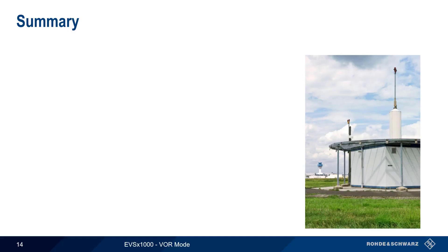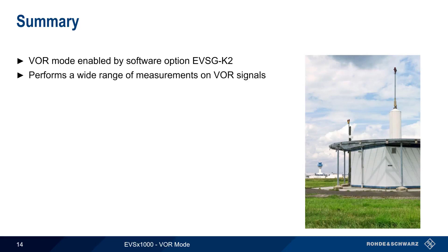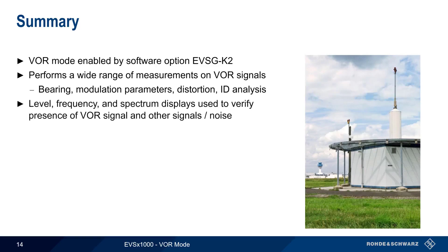In this presentation, we've covered VOR Analysis Mode, which is enabled by software option EVSGK2. This option performs a wide range of measurements on VOR signals, including the derived bearing, modulation information parameters for VOR signal components, various distortion measurements, and analysis of the station identification signal. Additional displays of the received signal level and frequency, as well as the spectrum view, can be used to verify the presence of the VOR signal and/or the presence of other signals or noise. All measurement data can also be logged together with GPS time and position information.